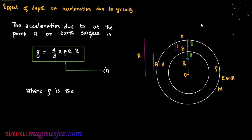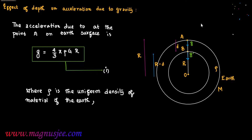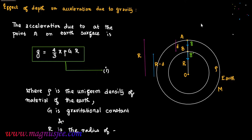Here, ρ is the uniform density of the material of Earth, and capital G is the gravitational constant. So g = (4/3) π ρ G R is the expression of acceleration due to gravity in terms of the density of Earth, where R is the radius of Earth.